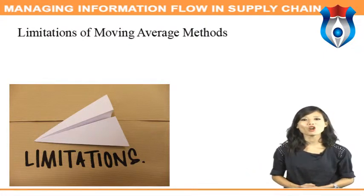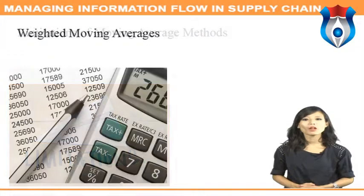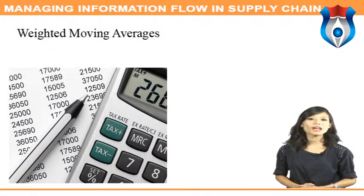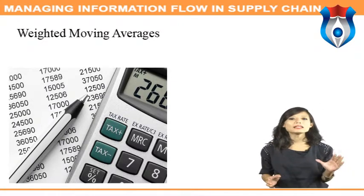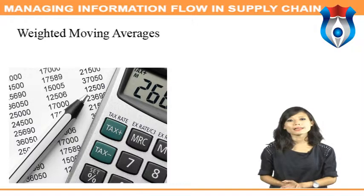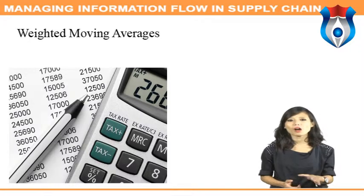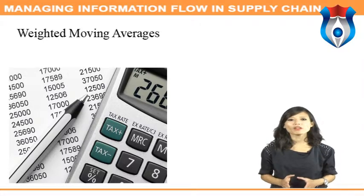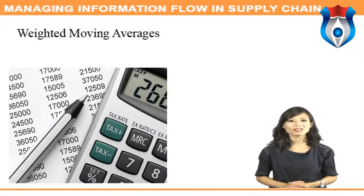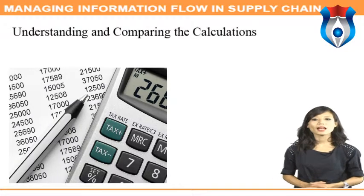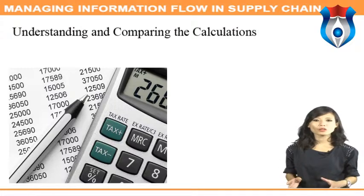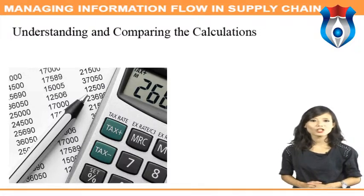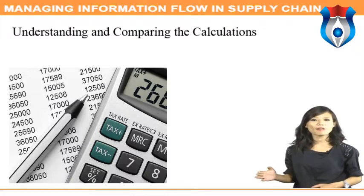Moving average techniques forecast demand by calculating an average of actual demand from a specified number of prior periods. Moving averages are considered a smoothing technique because by taking an average over time, we soften or smooth out the effects of irregular occurrences within the data. A moving average is calculated by averaging price values from a specific number of bars. There are two input parameters: price (a single price value from each bar) and length (the specified number of bars counting backwards from the current bar).